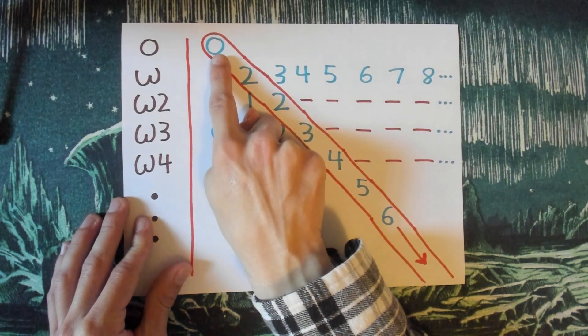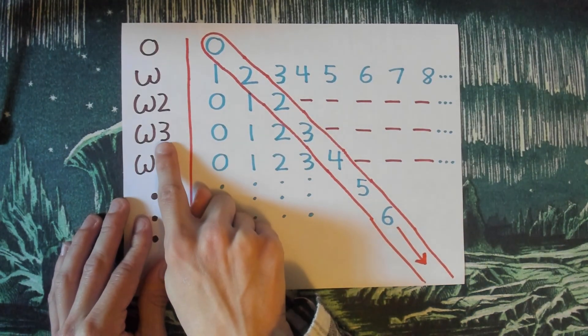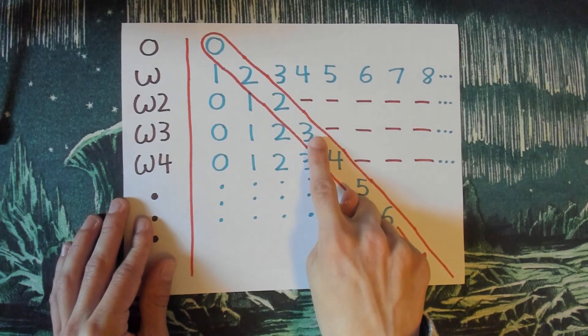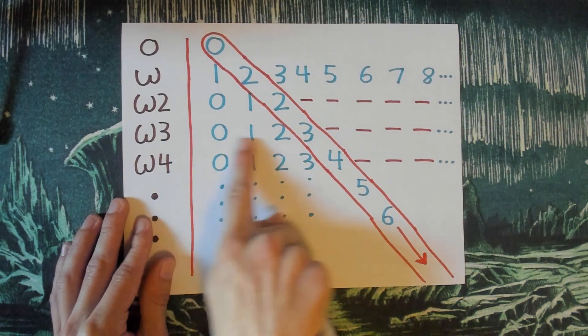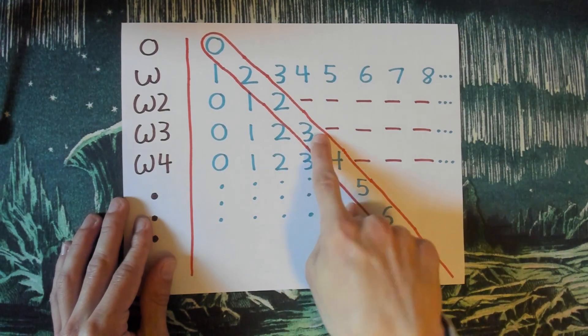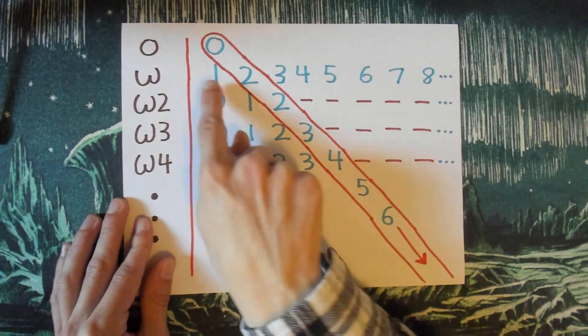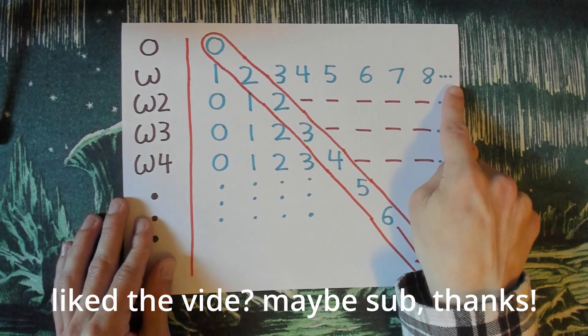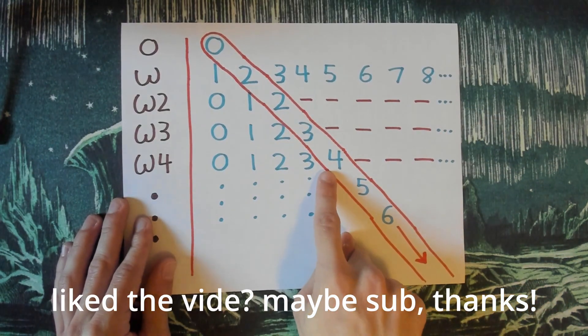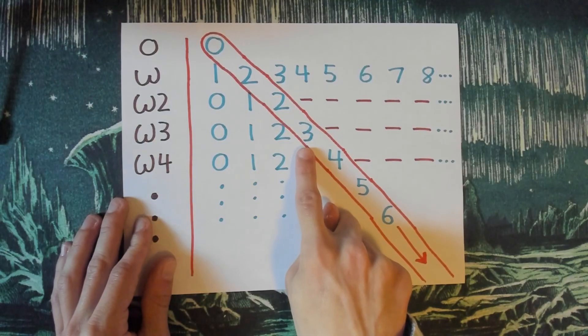Because if you plug in, say, 3 into omega squared, you get omega times 3. And then you plug in 3 to that, which takes you over to this 3. So it's kind of like you plug in 3, you go 3 down. Then you plug in 3 again, you go 3 over. It always takes you to this diagonal. And as you see, the diagonal grows more slowly than the row. So it's really just a recognition of, like, a little bit of a diagonalization, you know, coolness or whatever you would call it.